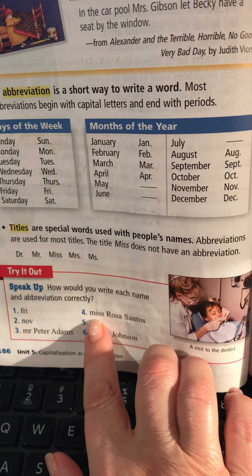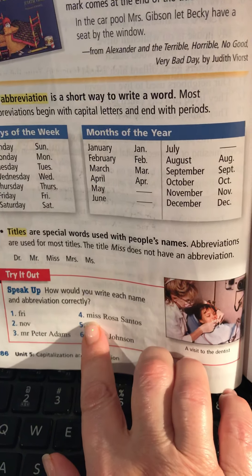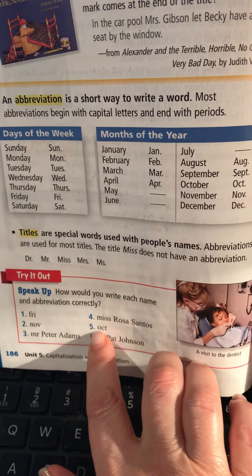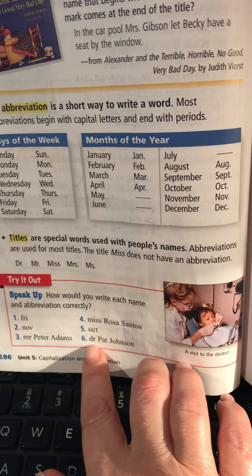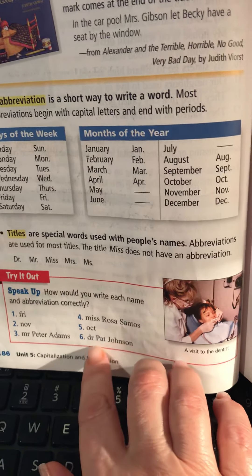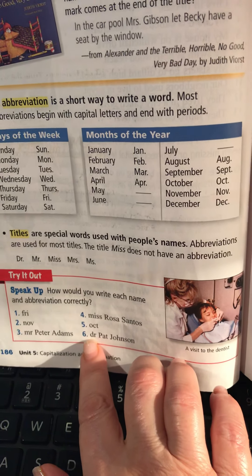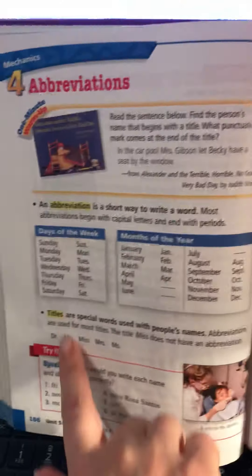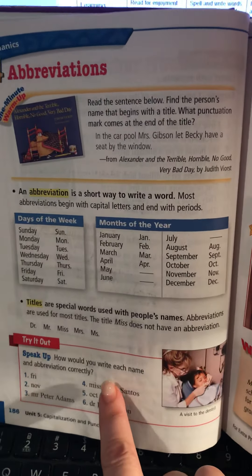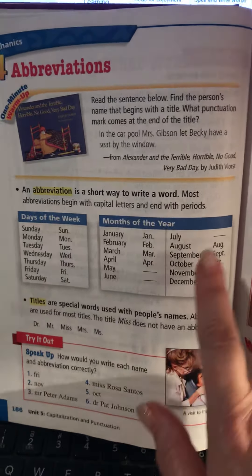For Miss Rosa Santos — capitalize the M, but would you put a period? I hope you said no, because Miss doesn't get shortened. For October — capitalize the O and put a period. And for Dr. Pat Johnson — how many of you said capitalize the D and put a period? That's what we're practicing. For many of you this is a review, and for some of you, you're learning the spellings and remembering to put periods after abbreviations.